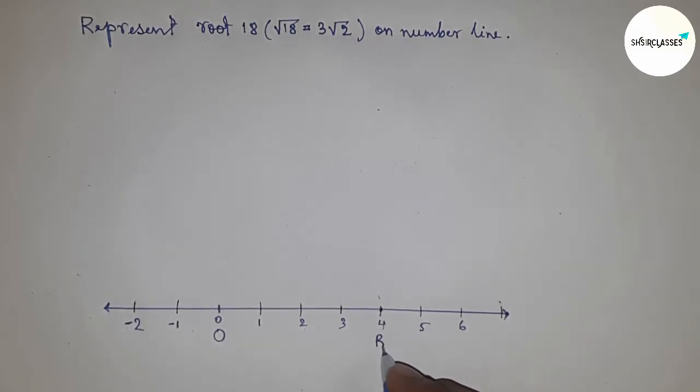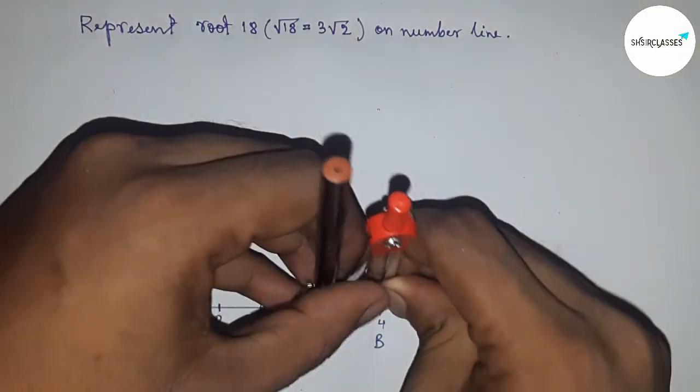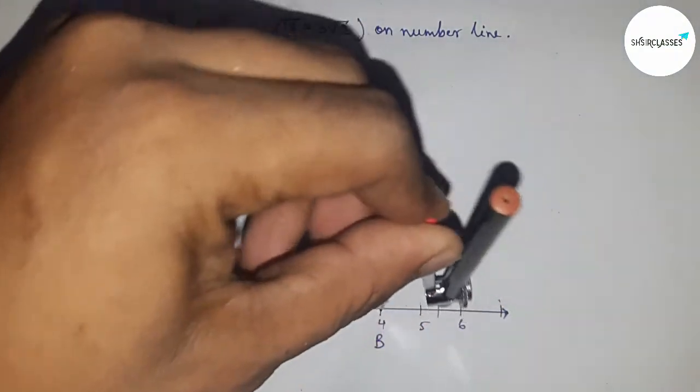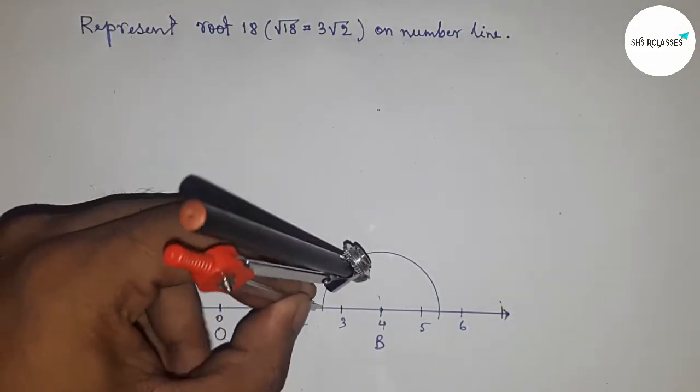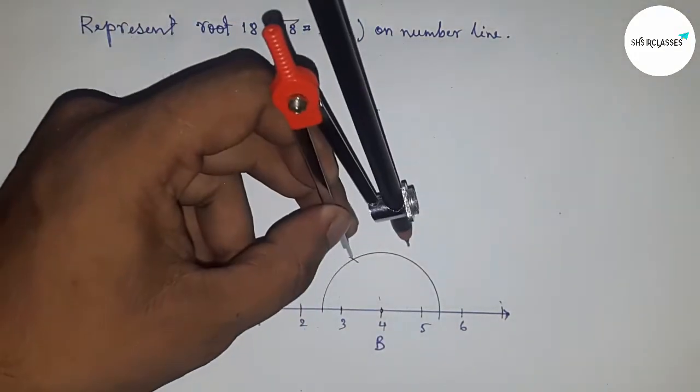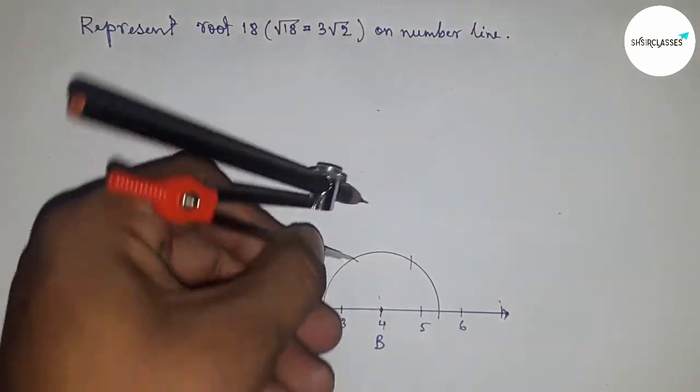First of all, we have to construct √17. If you don't know how to construct √17, then first watch my video on my channel. So first, constructing a perpendicular line on the point 4.